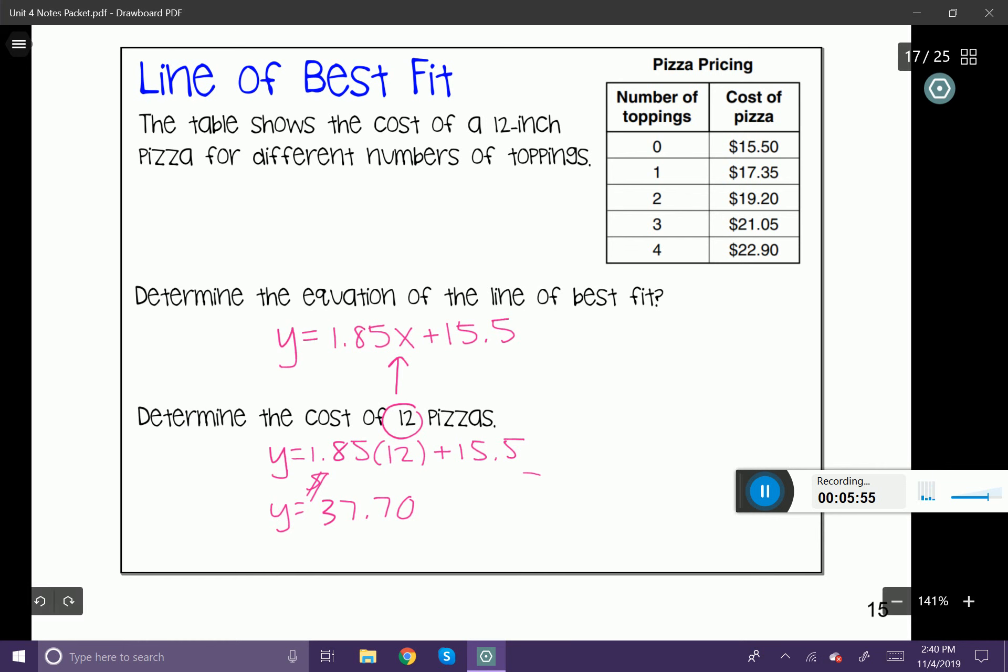Now, the point of this is, you can see in our table of values only goes up to four. But we know that if this trend continues, there will be a time when you can put 12 toppings technically. So if that were the case, we would want to know how much that pizza would cost.